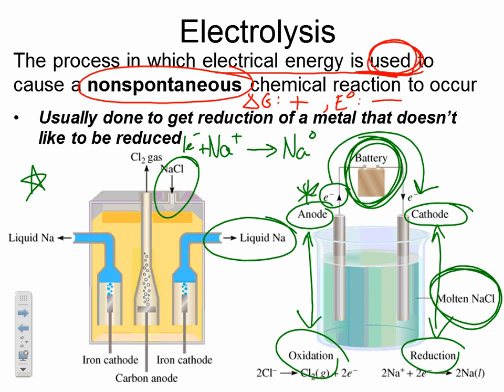Electrolytic cells often take place in one container, one beaker, but they still have ions that can balance the charge. Here, the molten sodium chloride still has Na⁺ ions and Cl⁻ ions that are capable of moving around to balance the charge, because it's molten — it's liquid. So in the liquid phase, sodium chloride still exists as distinct ions.